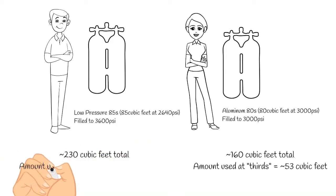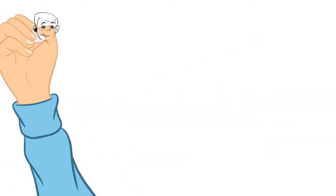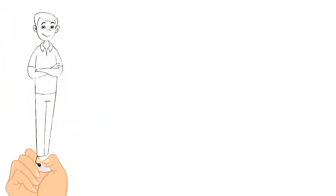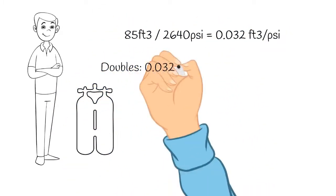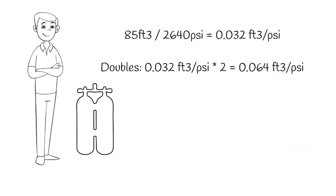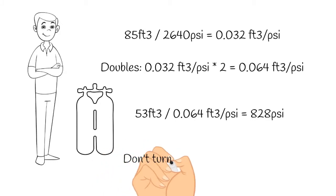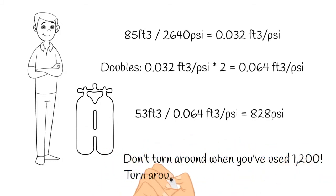So what needs to happen is this diver with the 85s needs to turn around once he's breathed 53 cubic feet, and that way they have enough gas to exit even if he loses all of his gas. So how do we calculate that? First off, we find the baseline of those 85s, and then we multiply that by two because it's doubles, so we get .064. We take that baseline and the cubic footage from his buddy, and we figure out how many psi he can use before he needs to turn around. What we find is that he can actually only use 800 psi, and that's of course because we round it down.